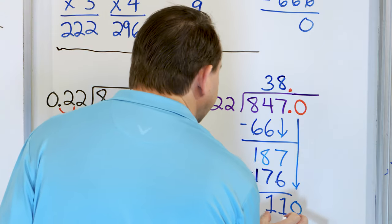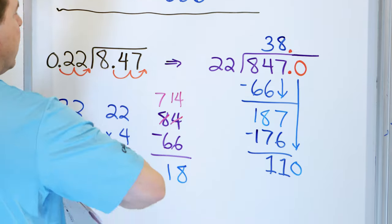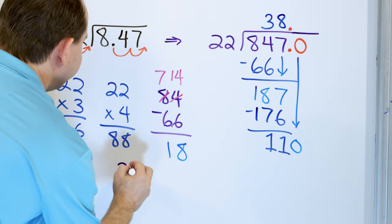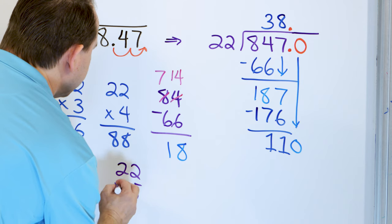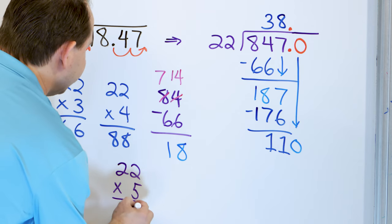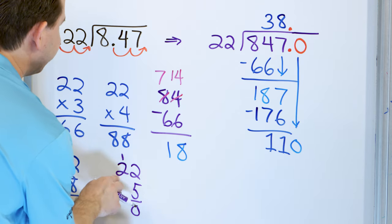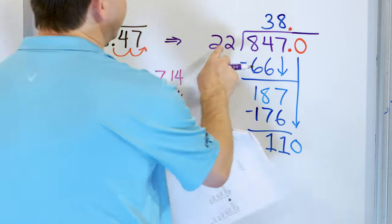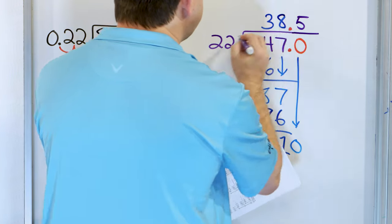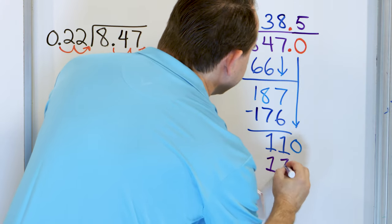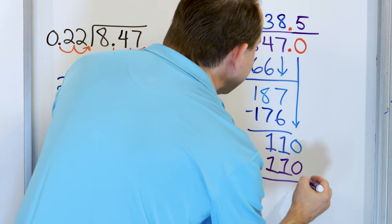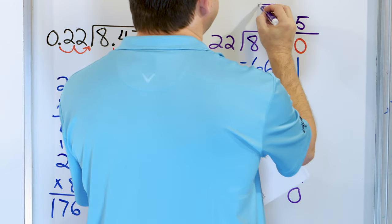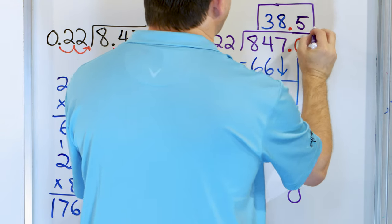Now we have 110 down here. 22 times what is 110? Let's try 22 times 5: 2 times 5 is 10, carry 1; 2 times 5 is 10, plus 1 is 11. So 22 times 5 is 110. Multiply — 110. Subtract — now we get a remainder of zero. Now we know we can stop. So the answer to this problem is 38.5.